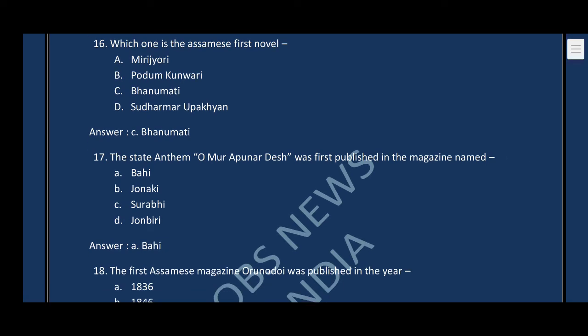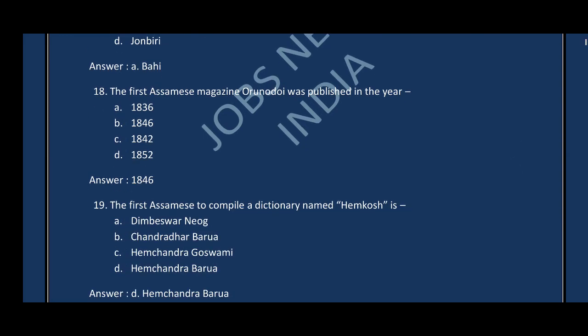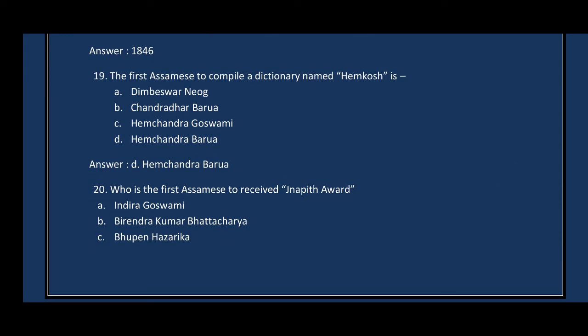Question number seventeen: The State Anthem 'O Mur Apunar Desh' was first published in which magazine? Question number eighteen: The first Assamese magazine Orunodoi was published in which year? Question number nineteen: The first Assamese to compile a history named Hamcoast is? Question number twenty: Who is the first Assamese to receive the Jnanpith Award?